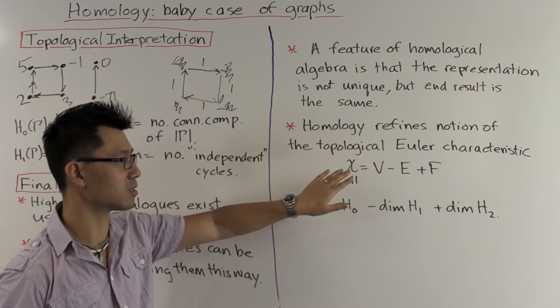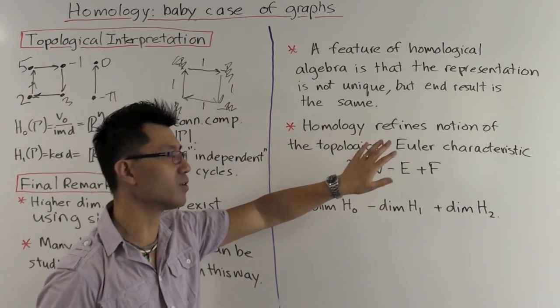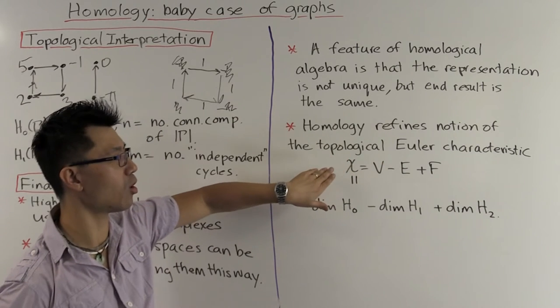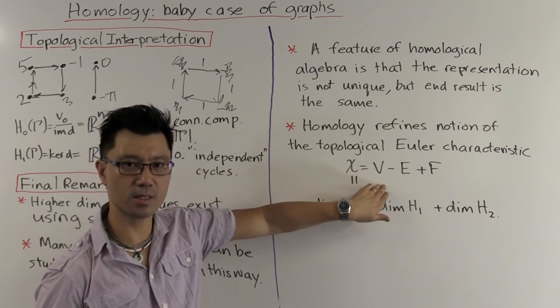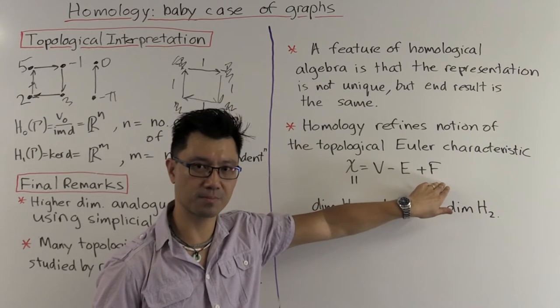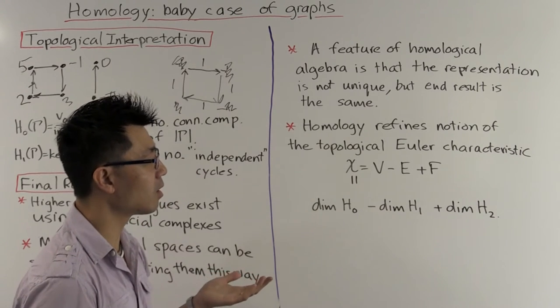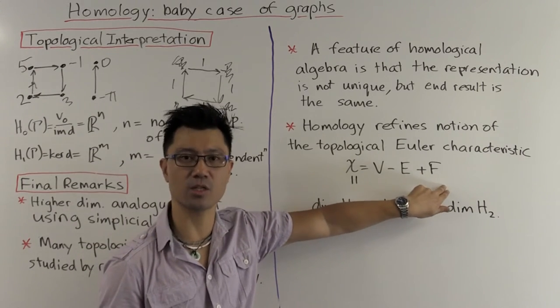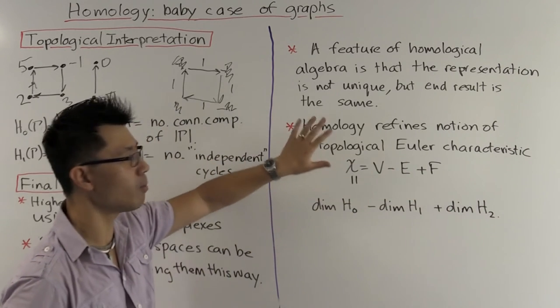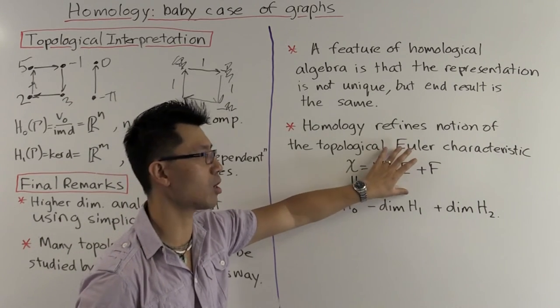You might have seen an example of this before in the topological Euler characteristic that you meet when you study compact-oriented surfaces. In that case, we triangulate a surface, and you might remember the formula for the topological Euler characteristic is it's the number of vertices minus the number of edges plus the number of faces. Now, of course, that triangulation can change quite a bit. So these V's, E's, and F's, they can change quite a lot.